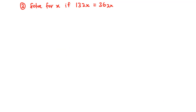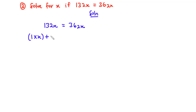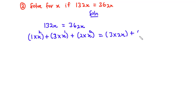Now let's solve example 3: solve for x if 132 base x equals 36 base 2x. So we have 1 times x squared plus 3 times x to the power 1 plus 2 times x to the power 0, equals 3 times (2x) to the power 1 plus 6 times (2x) to the power 0. Note that on the right-hand side, the exponent is affecting 2x, not just x.